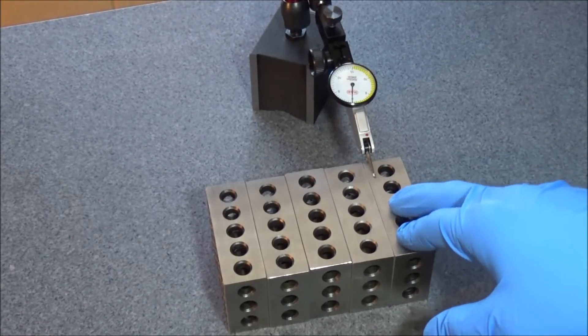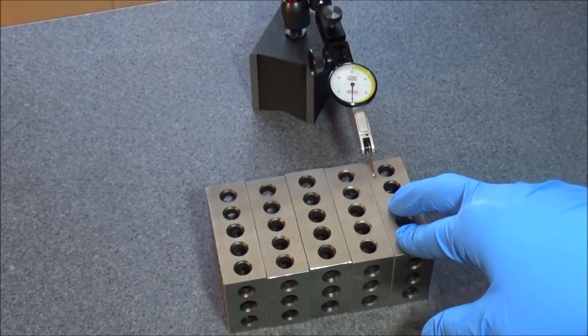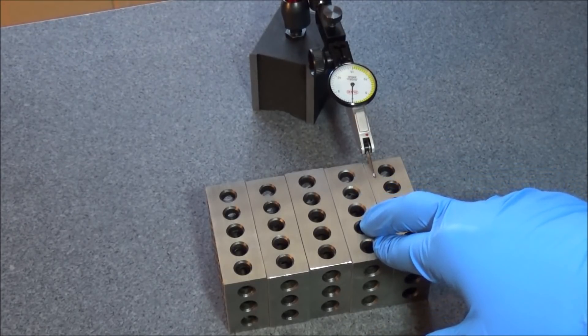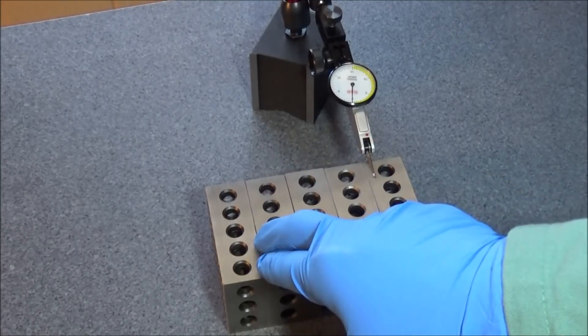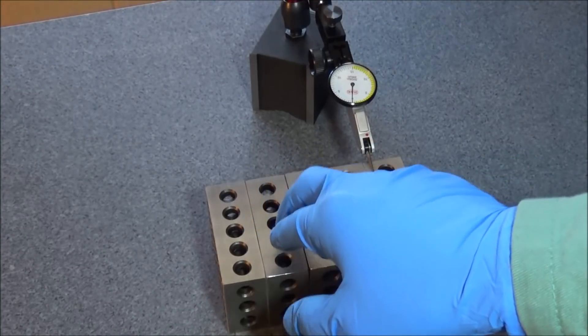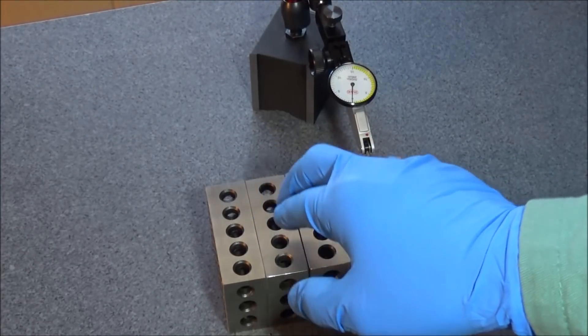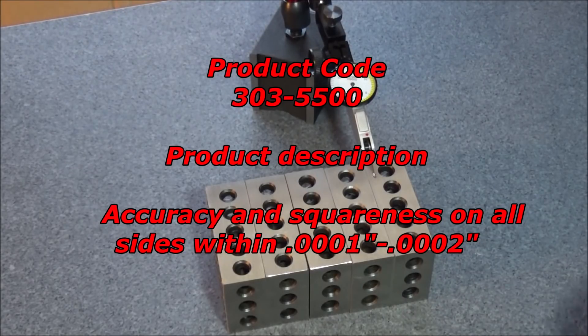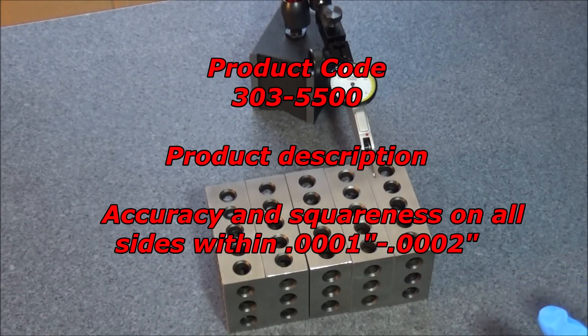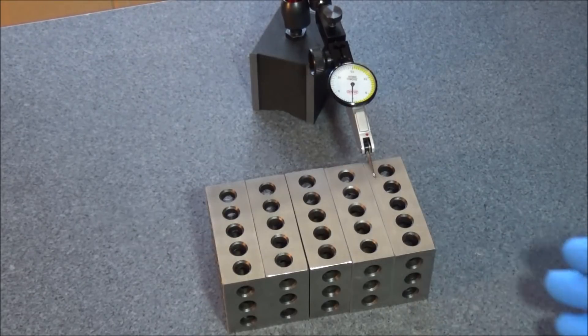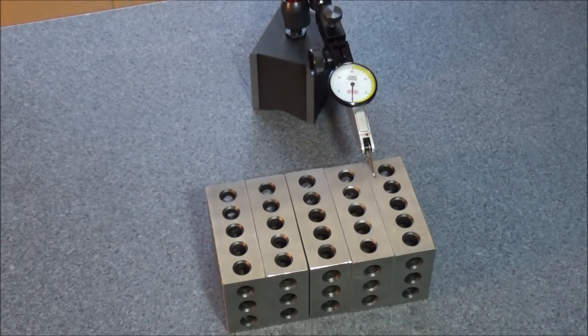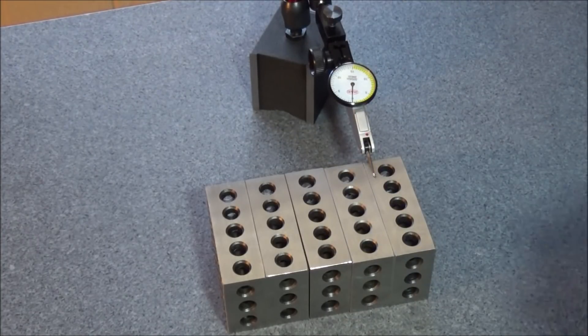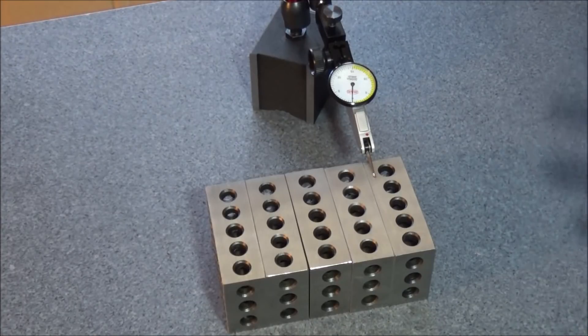So these are supposed to be plus or minus a tenth of an inch, and if you look at the description it says 0.0001 to 0.0002. Sometimes the description is not real good, it's kind of vague. But some of them I saw for plus or minus two tenths, and these say that they're supposed to be I guess plus or minus a tenth.